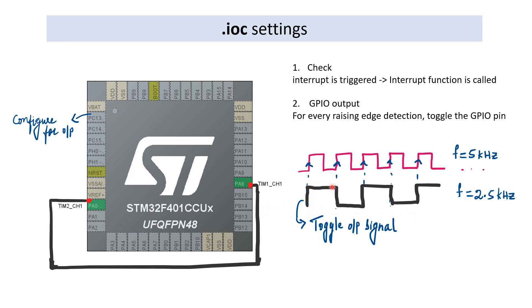For every rising edge detected, the GPIO pin toggles. The first toggle goes high, the second goes low, and so on. So the time period of the toggle output pin is double compared to the time period of the PWM we generated, meaning its frequency is half. The PWM is at 5 kHz and the toggled output will be at 2.5 kHz, because we are toggling only on rising edges.